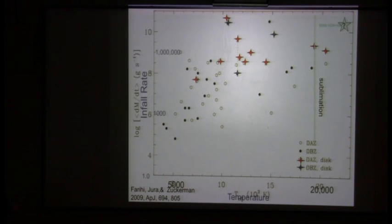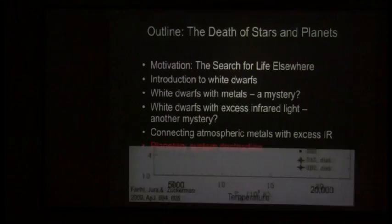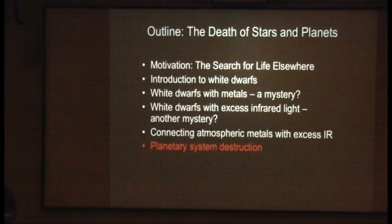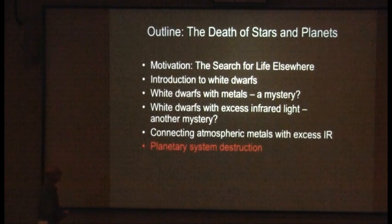So, this is just a way of comparing them. Every case where we have the detective ability to see the disc, or nearly every case, if we see the metals, we see the disc. So, we think they're one and the same thing. You have a disc, you have dust around it, it's falling in. Okay. So, how is all of this connected to planetary system destruction? What created this thing in the first place?